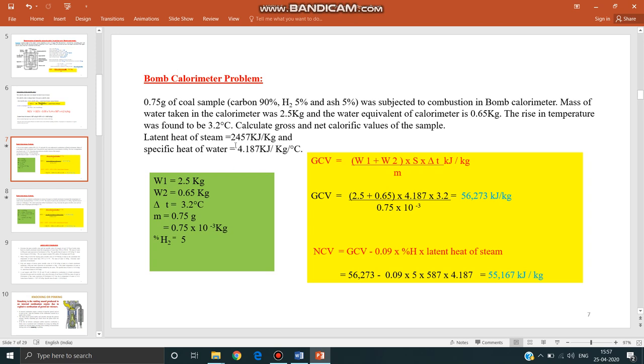Now the given data: hydrogen heat of steam is this much, specific heat of water is this much. Now please list the values given. W1 is mass of water taken in the calorimeter, W2 is water equivalent of calorimeter that is 0.65 kg, delta T is rise in temperature, and M is mass of chemical fuel.